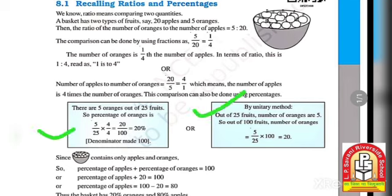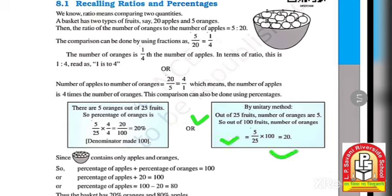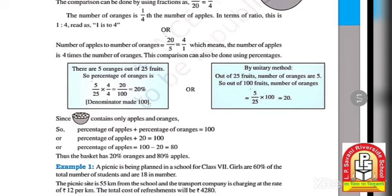The comparison can also be done using percentage. First method: there are 5 oranges out of 25 fruits, so percentage of oranges = 5/25 × 4/4 = 20/100 = 20%. Second method: out of 25 fruits, 5 are oranges, so out of 100 fruits, the number of oranges = 5/25 × 100 = 20. In this way you can convert a ratio to a percentage.